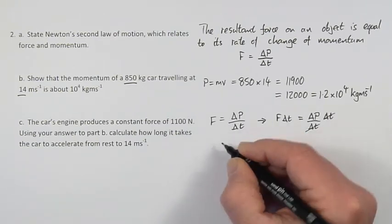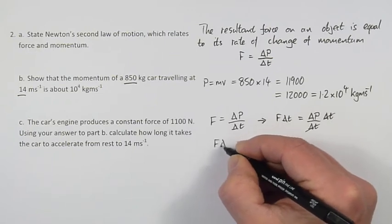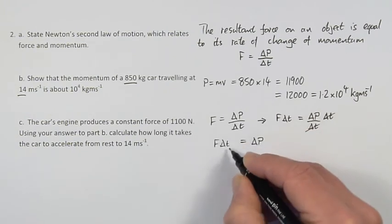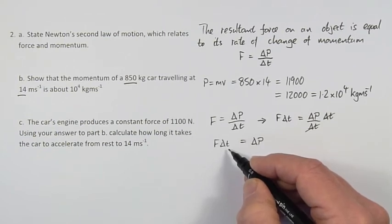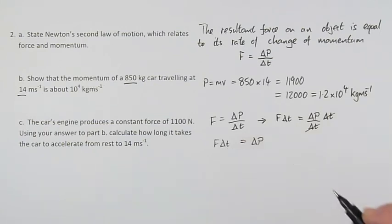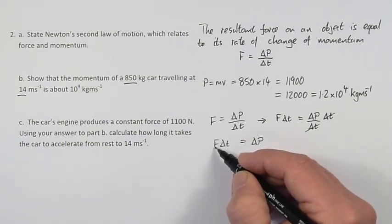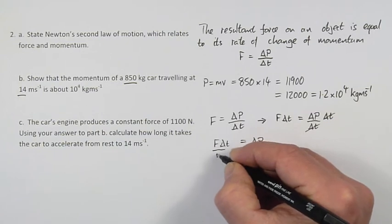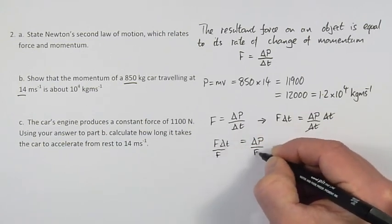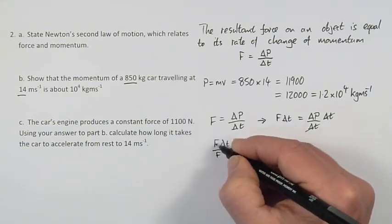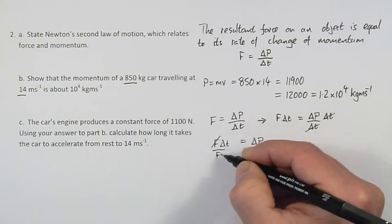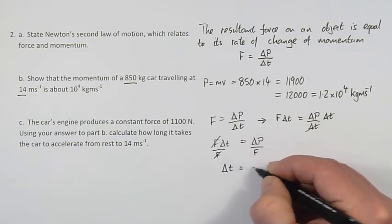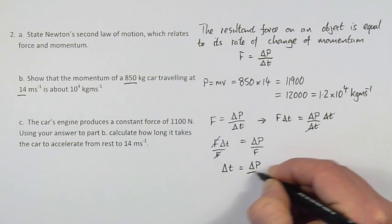So we now have a formula that says that force times the time is equal to the change in momentum. We would like to have the time on its own. So if I divide through both sides of the formula by the force, that would give us time on its own. So I will divide that side by the force and also have to do the same thing on the other side. The forces are multiplied and divided on this side so they cancel out. So that gives me the final formula that the change in time is equal to the change in momentum divided by the force.